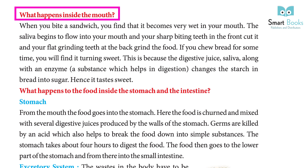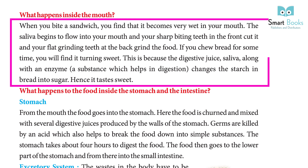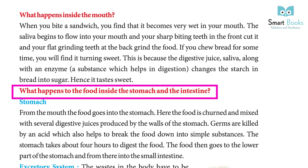What happens inside the mouth? When you bite a sandwich, it becomes very wet in your mouth. Saliva begins to flow, your sharp biting teeth in the front cut the food, and your flat grinding teeth at the back grind it. If you chew bread for some time, it turns sweet because saliva, along with an enzyme, changes the starch in bread into sugar.